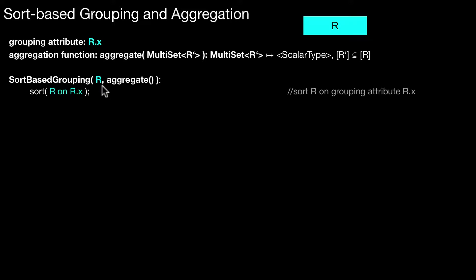And then, very similar to sort-merge join, we first have to sort the input on the grouping attribute. Again, if it's already sorted, you don't have to do that. For instance, if you already have an index on this key and you want to group on that, maybe you don't have to sort. But in the general case, you have to sort first.